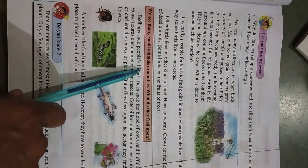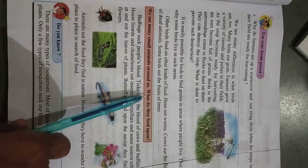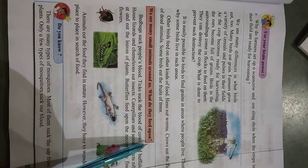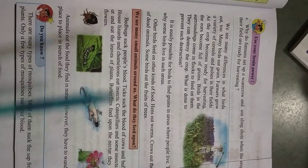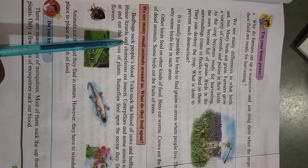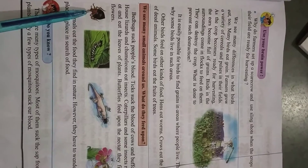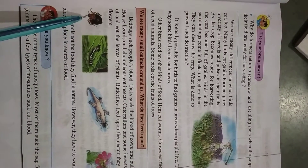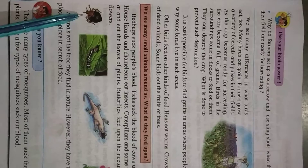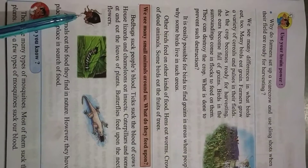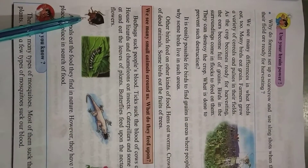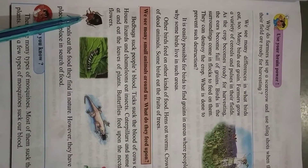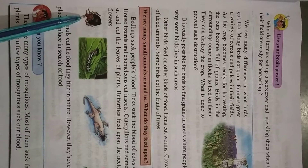We see many small animals around us. Bed bugs suck people's blood — we can find them in the house. Ticks suck the blood of cows and buffaloes; we can usually find these insects on animals.